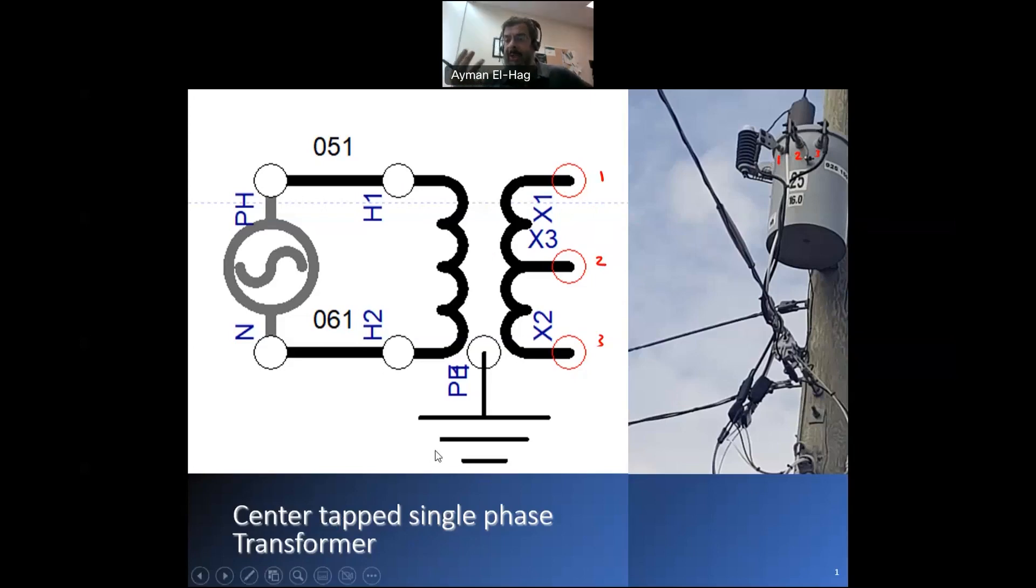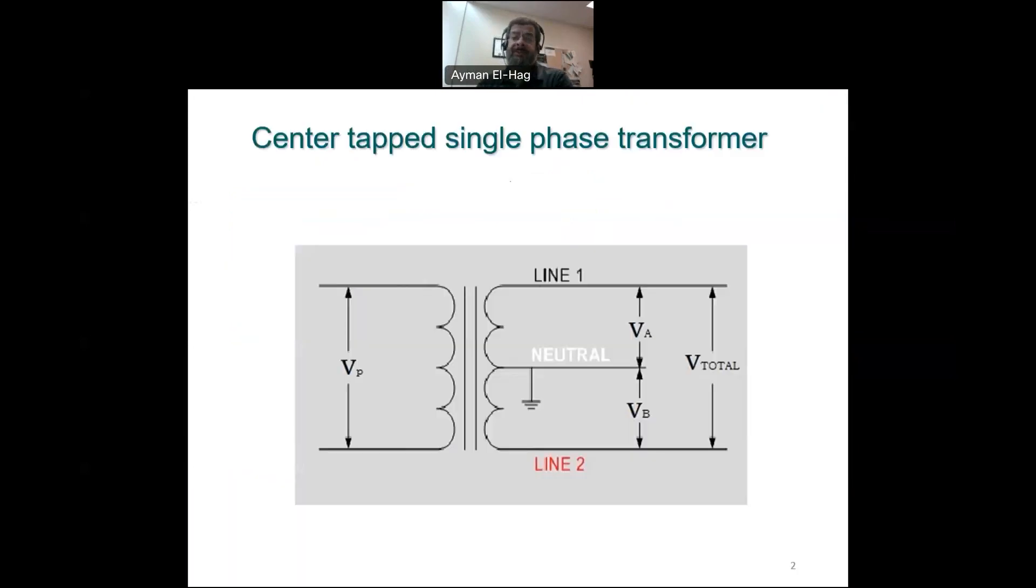So let's have a look at why we need this type of transformer and why we have these three bushings. Basically, the center tapped transformers, from its name, at the center of the secondary side you will have one wire. So the number of turns from point one to point two is exactly equal to the number of turns between point two and point three, meaning that the voltage between line one and the center tap is equal to the voltage between line two and the center tap.